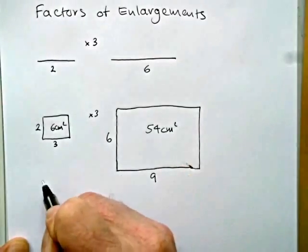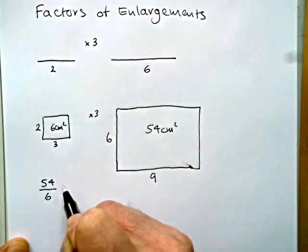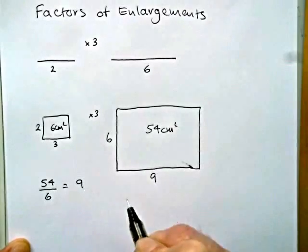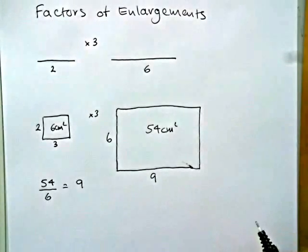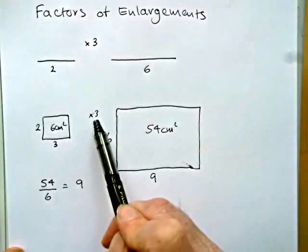Now if we do 54 divided by 6, we'll find that the area has changed by a factor of 9. So although the enlargement factor is 3, the area factor is 9.